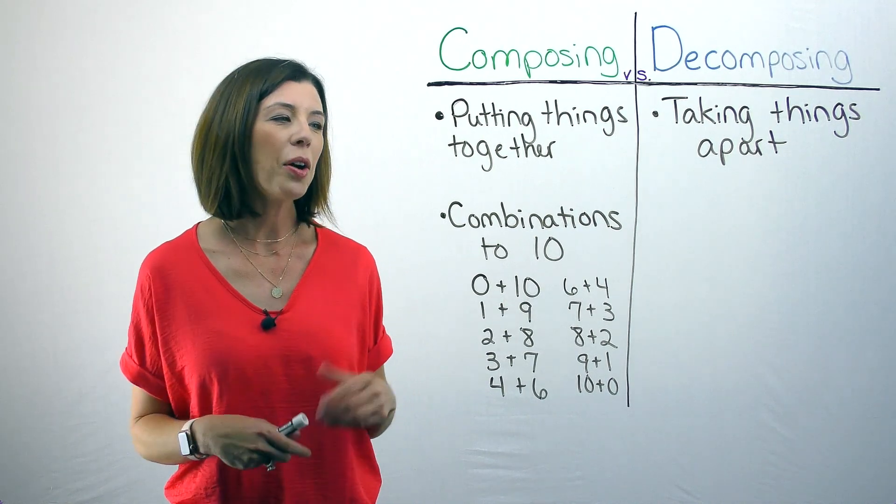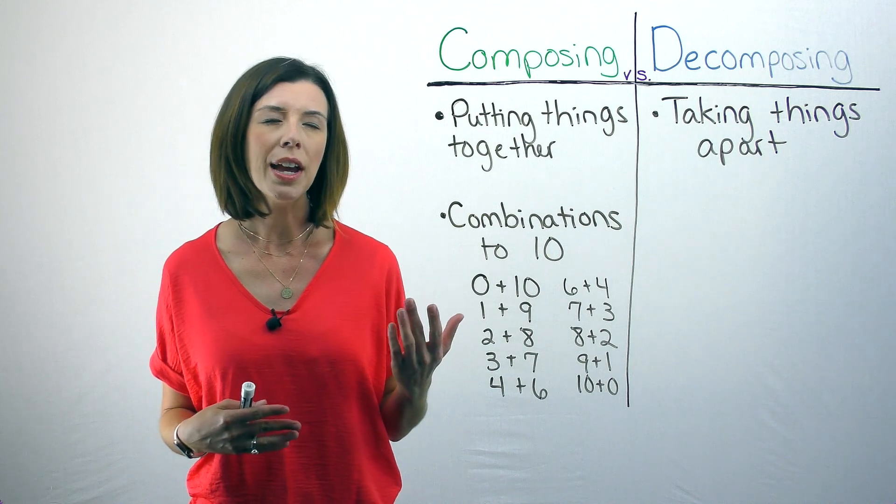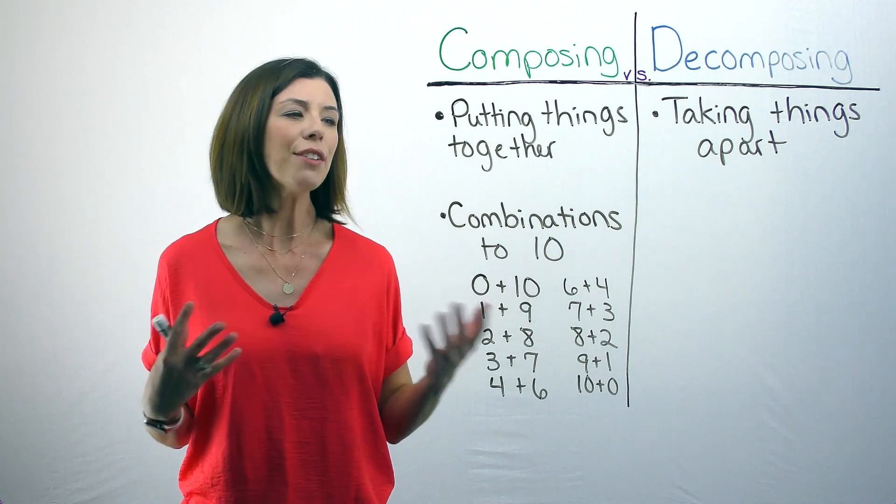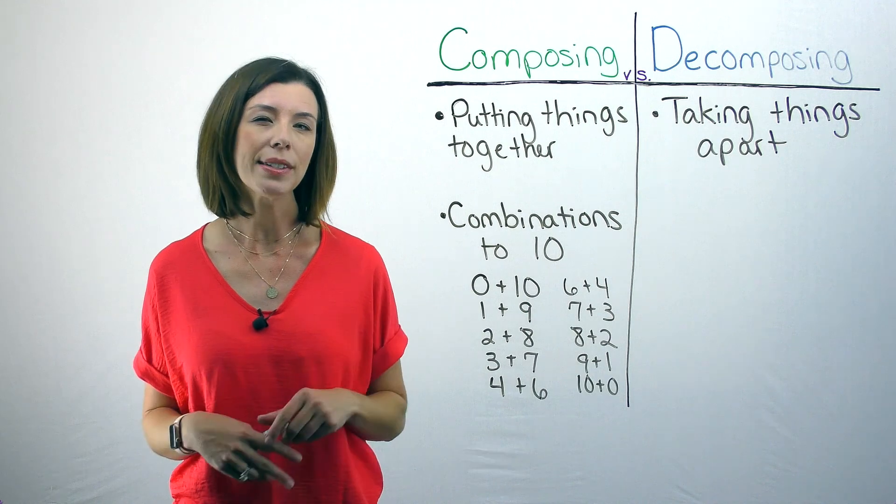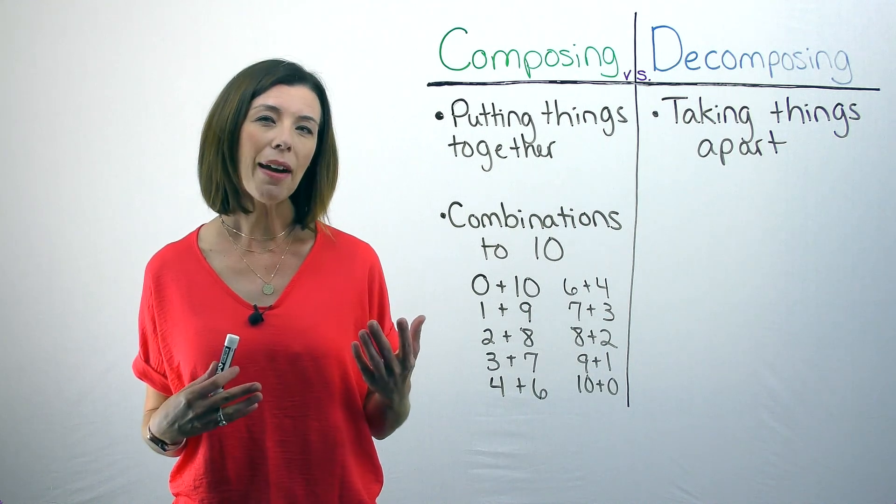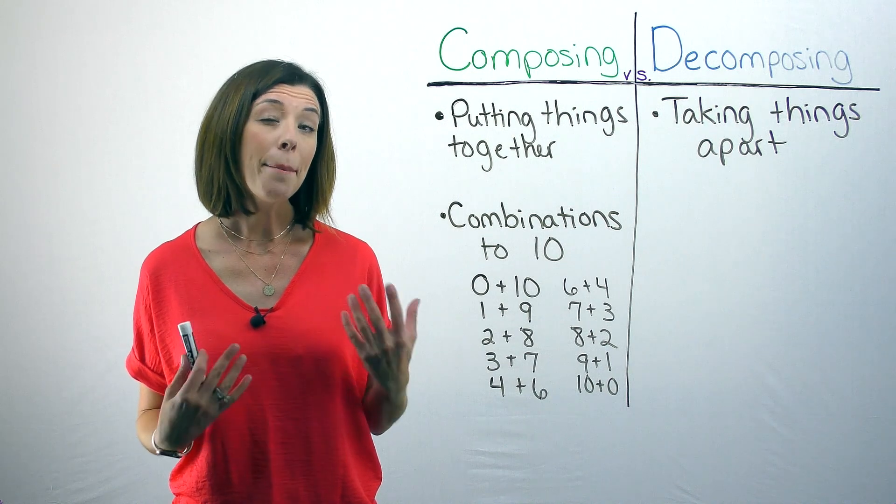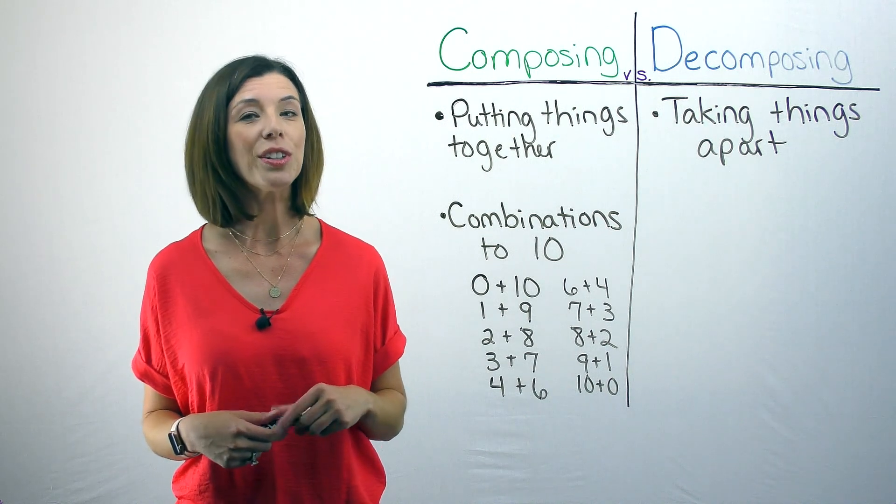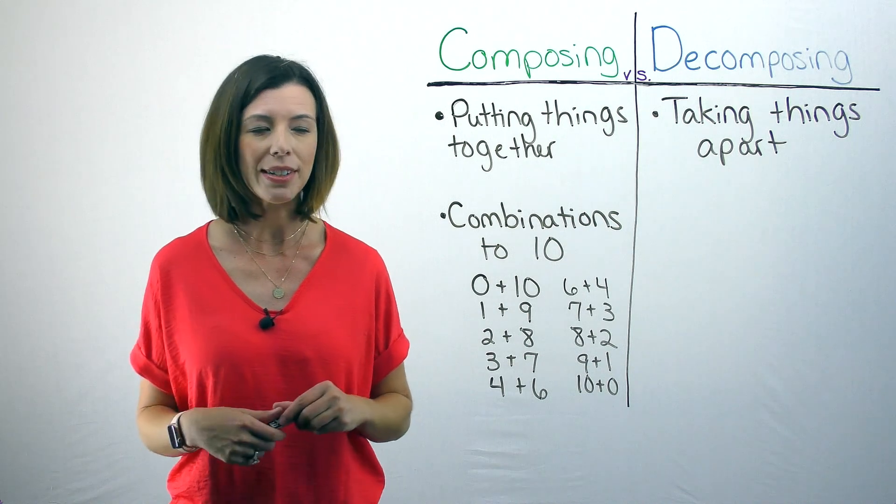Now I want you to think about why would combinations to ten be so important? Who cares if they understand all the different ways that we can make ten? Why do you think that might be? If you think about it, since we live in base ten world, combinations to ten are actually very helpful. Let me give you an example.